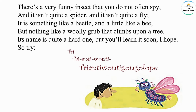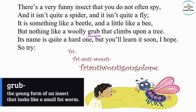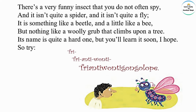It is not like a woolly little fat worm that climbs upon a tree. Grub means the young form of an insect that looks like a small fat worm. The poet is saying this insect is not in that young worm-like stage. Try to learn its name — try, try, anti-wanti, try anti-wanti gongolap!